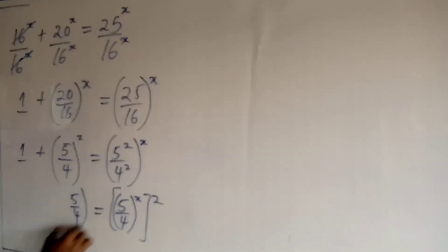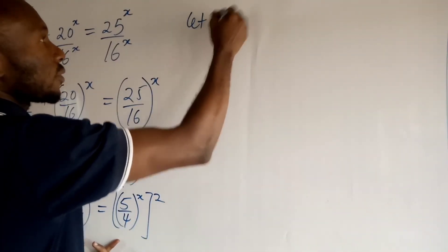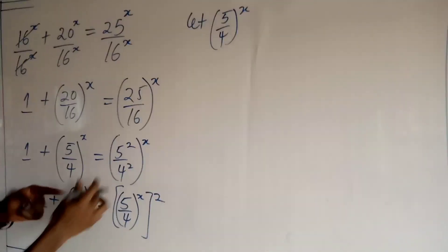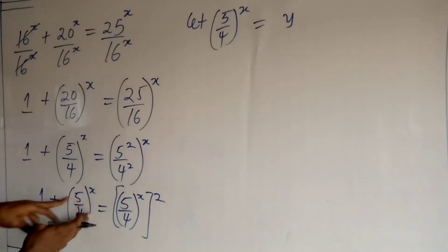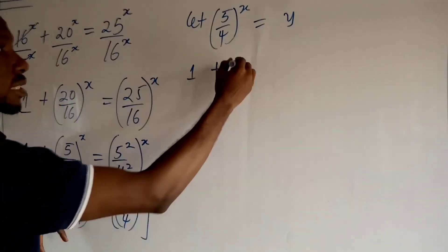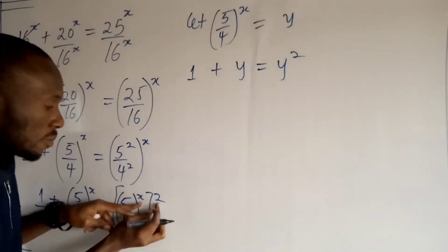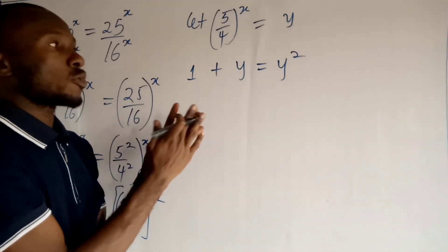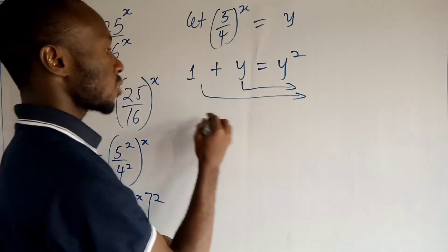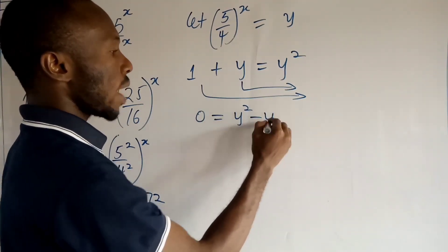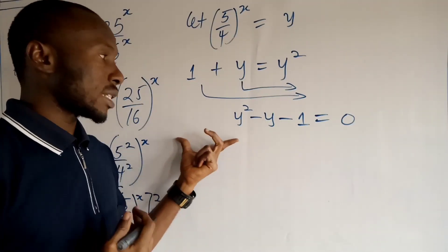So I have 5 upon 4 all to the power x, plus 1, equal to 5 upon 4 all to the power x, quantity squared. I can make a substitution here: let 5 upon 4, all to the power x, equal to y. So whenever I see 5 over 4 all to the power x, I'll replace it with y. This becomes 1 plus y equals y squared. At this point we have a quadratic equation, so I'm going to write it in standard form.